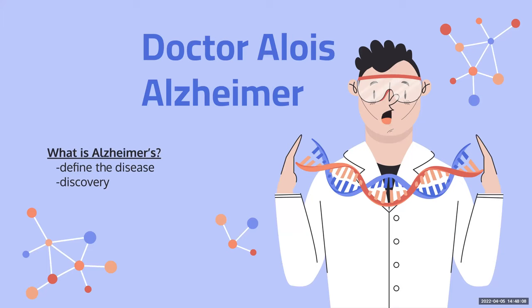Alzheimer's disease is a brain disorder that slowly destroys memory and thinking skills, and eventually takes away the ability to perform the easiest tasks. It was discovered by Dr. Alois Alzheimer after examination of a person who died from an unknown disease. The main observed features included abnormal clumps now called amyloid plaques, as well as tangled bundles of fiber now known as neurofibrillary tangles.